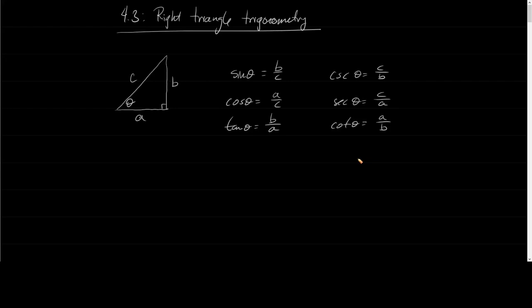We already knew this — in general, this is essentially SOH-CAH-TOA. But now let's discuss a specific type of right triangles. Let's talk about special triangles.